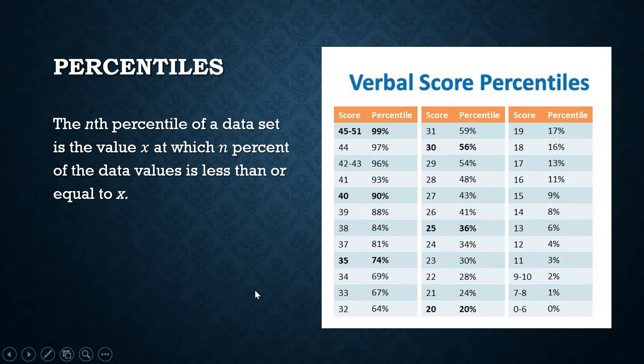The second column is what we call the percentile. What is the meaning of this? Let's say, for example, a score of 44 has a percentile score of 97. What does that mean? It means that 97% of the scores in the examination is less than or equal to 44.